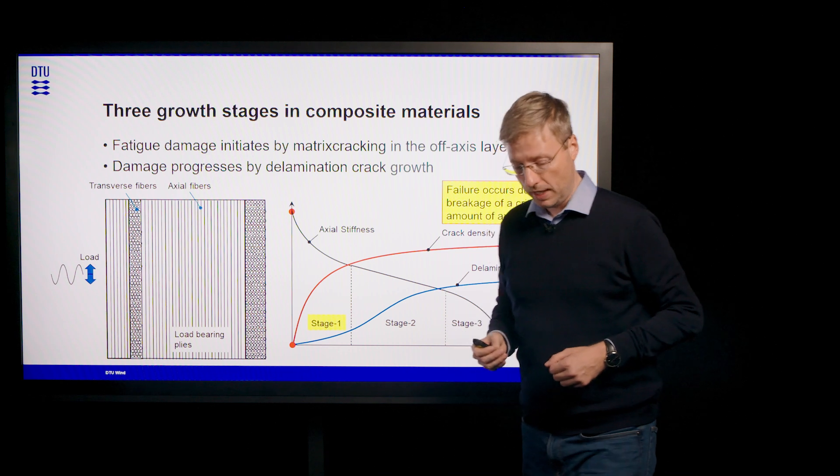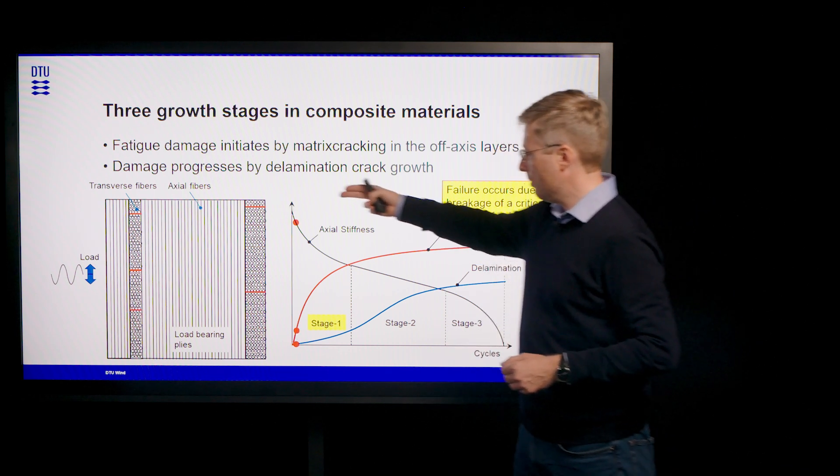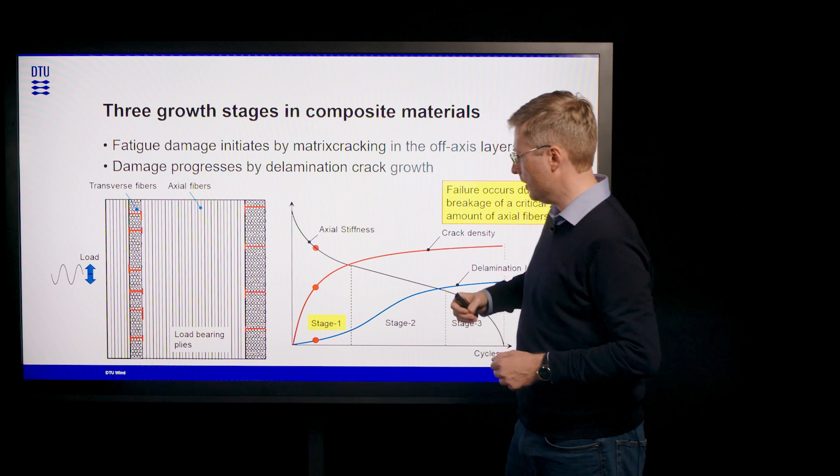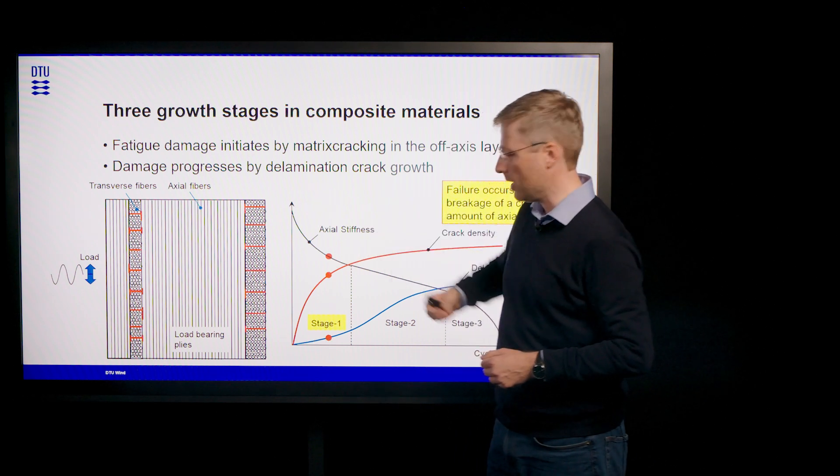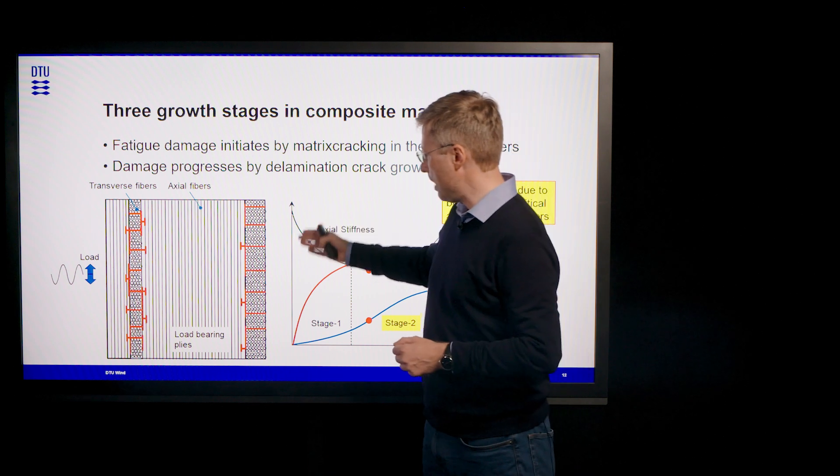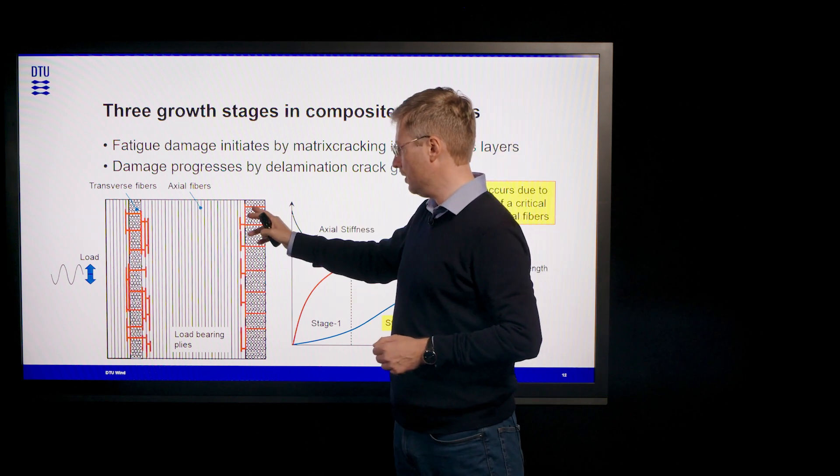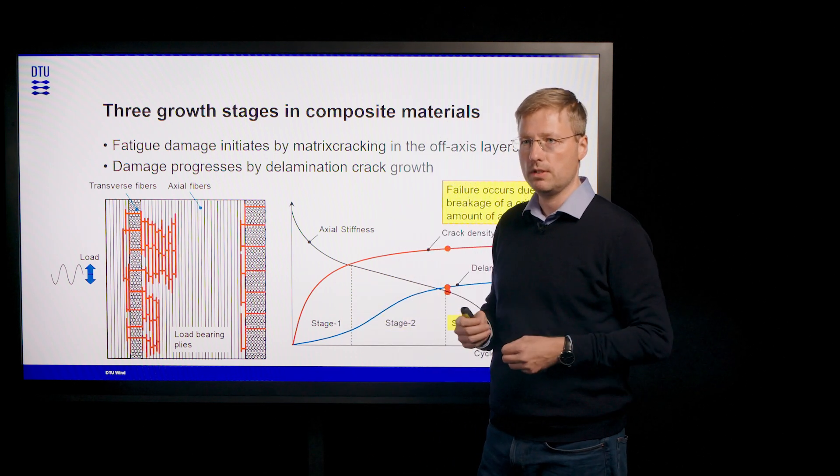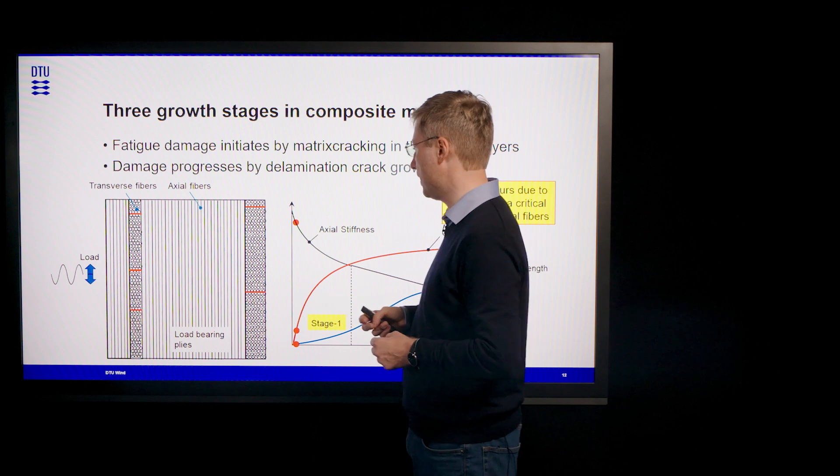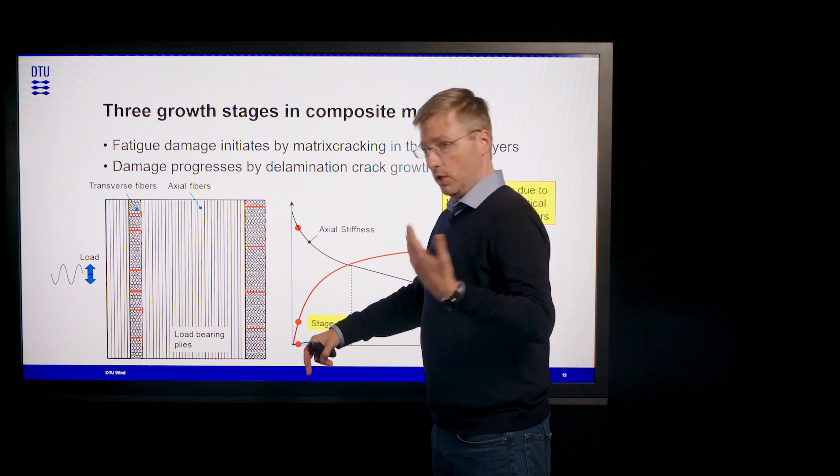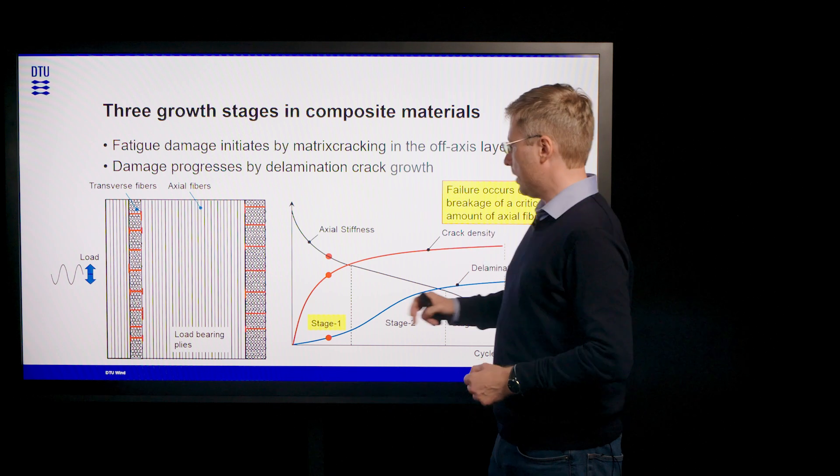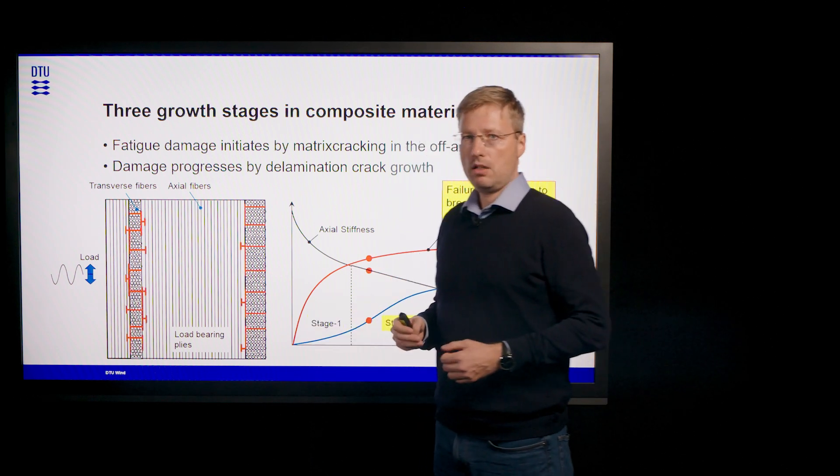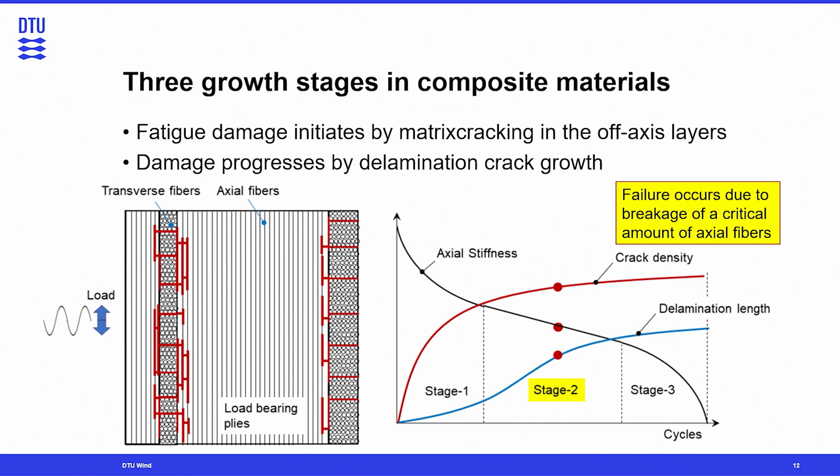Again, if we subject such a laminate to cyclic loading conditions, we first start with stage one. And stage one is signified by a very fast drop of this initial stiffness. And what happens in this region is that we are forming these micro cracks in the transverse layers, as shown on the previous slide, because the stresses in the matrix are the highest. If we continue cycling, then the density of these micro cracks will increase. But after a while, it will flatten out and reach some sort of a plateau or saturation.